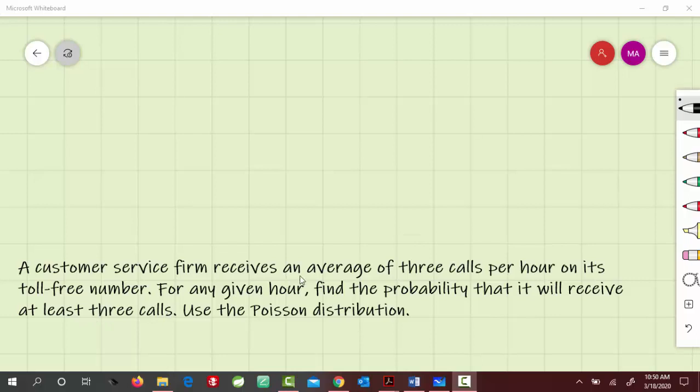The average of 3 calls per hour is the lambda value in the Poisson distribution, so lambda equals 3.